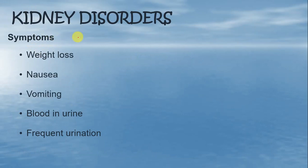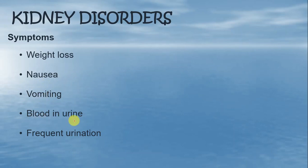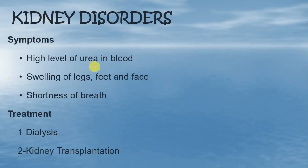What are the symptoms? कैसे पता चलता है कि किसी patient को kidney fail हो गया है? Number one, weight loss — ऐसे patient का weight तेजी से loss होने लग जाता है. Number two, nausea — जिसमें patient को irritation और discomfort feel होती है, especially in stomach, मतली वाली condition होती है. Then vomiting. Then blood in the urine — ऐसे patient के urine में blood आने लग जाता है. Frequent urination — बार-बार urine का pass करना. Blood के अंदर urine की concentration बहुत ज्यादा हो जाती है. Swelling of legs, feet and face. Shortness of breath — सांस उखड़ने लग जाता है, या सांस लेने में बहुत ज्यादा दुशवारी आती है.